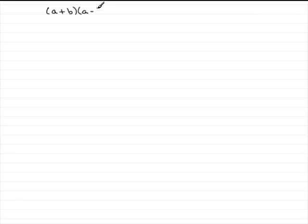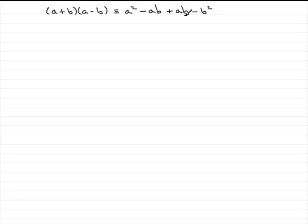Brackets of the form a plus b times a minus b. Let's see what we get. In the usual way, if you're expanding this out, this is identical to a times a, which is a squared. Then a times minus b, which is minus ab. And then b times a, which is plus ba, but we can write that as ab. And then b times minus b, which is minus b squared. And minus ab plus ab comes to zero. So what that leaves us with is just simply a squared minus b squared.